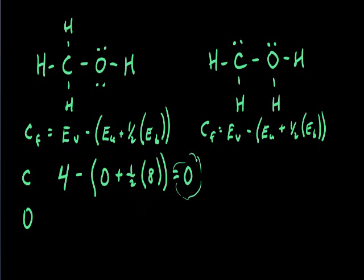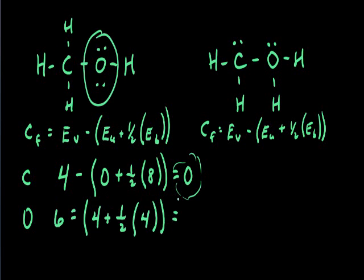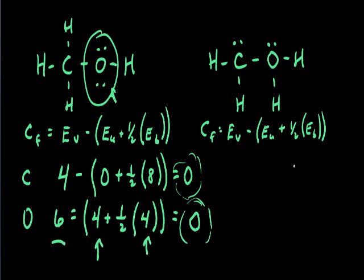We'll now repeat the calculation for our oxygen atom in this Lewis structure. The oxygen atom here has six valence electrons. We can count four unshared electrons on it. The two single bonds attached to the oxygen count as four bonding electrons. Calculating this, we also get a value of zero for our formal charge for oxygen in this particular Lewis structure.